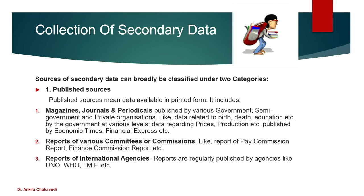Published sources include magazines, journals, and articles published by various government, semi-government, and private organizations — for example, data related to birth, death, and education published by the government, or data regarding price and production published by the Economic Times. Reports of various committees or commissions, like pay commission or finance commission reports, are also published sources. Reports regularly published by international agencies like UNO, WHO, and IMF are also published sources.